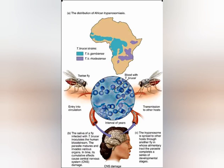Trypanosoma brucei gambiense occurs in the western part of Africa, going into the central part and some areas of the north. Trypanosoma brucei rhodesiense occurs from central going down to the eastern and southern parts of Africa. This is just a general overview.